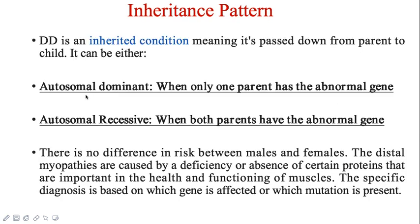DD is an inherited disorder, meaning it is passed down from one generation to the next. It can be either autosomal recessive or autosomal dominant. Autosomal dominant means only one parent has an abnormal gene, while autosomal recessive means both parents have an abnormal gene. Both genders are affected equally in this disorder.